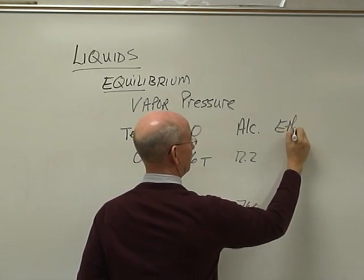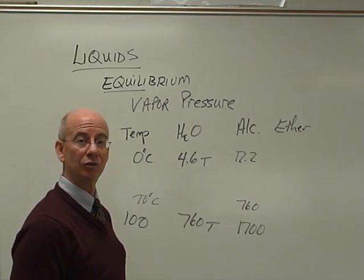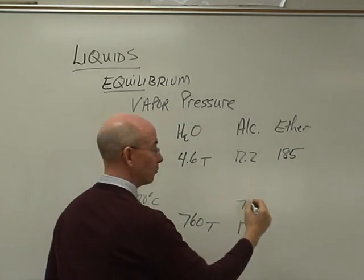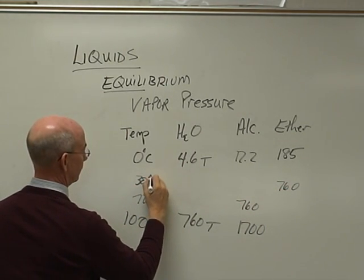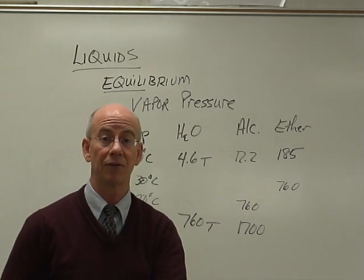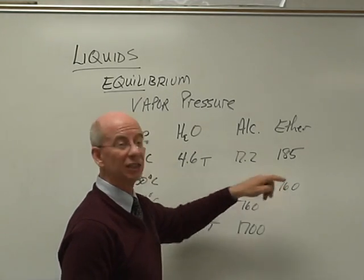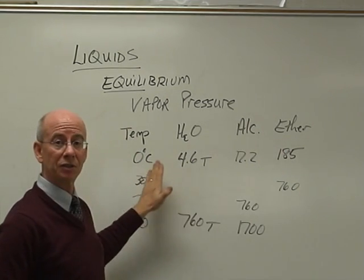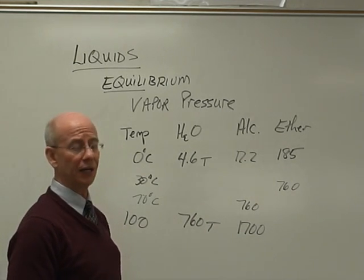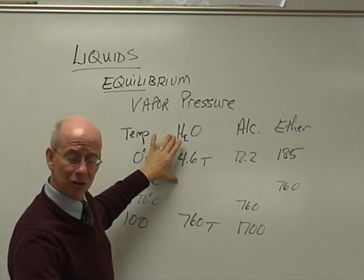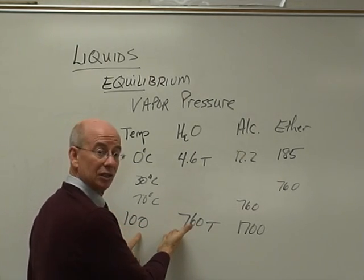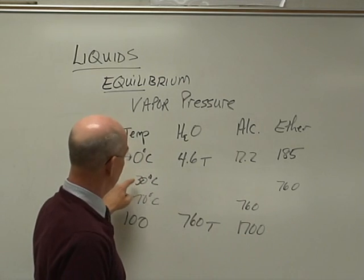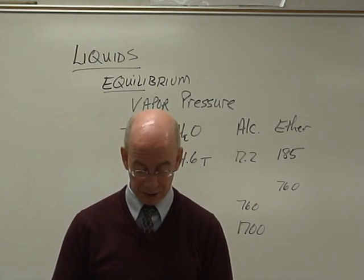Then we have another one called ether. This used to be the anesthesia that was used. Its vapor pressure is 185 torr at zero degrees, and the 760 torr standard pressure point is right around 30 degrees Celsius. Room temperature is 25, so if you set ethyl ether out in the room, very quickly it's going to evaporate off. Because its vapor pressure — its pressure to go from liquid to gas — is very, very high. We can use vapor pressure to compare these three substances: water is much more stable, and the molecules holding water together must be stronger, because it takes so much longer to boil water than ether. Ether wants to be a gas at a much lower temperature.